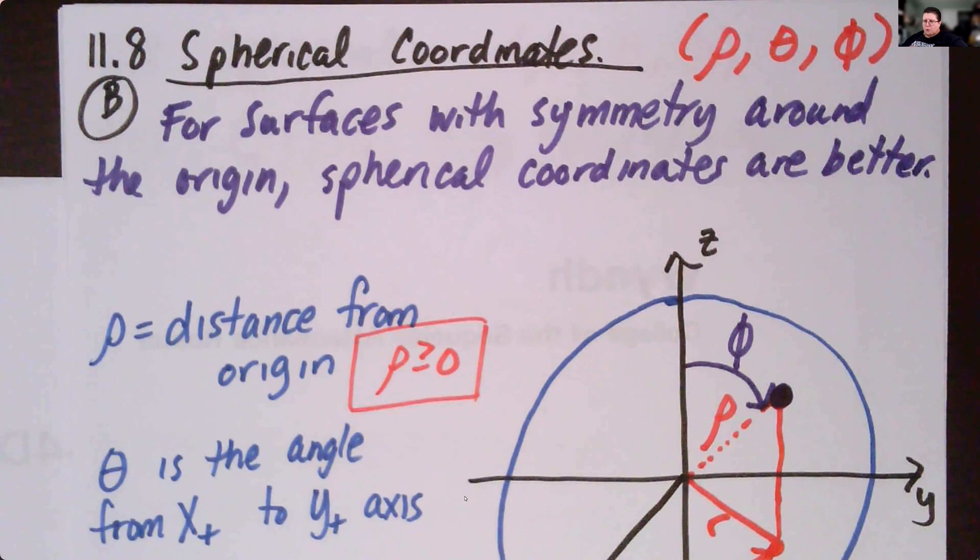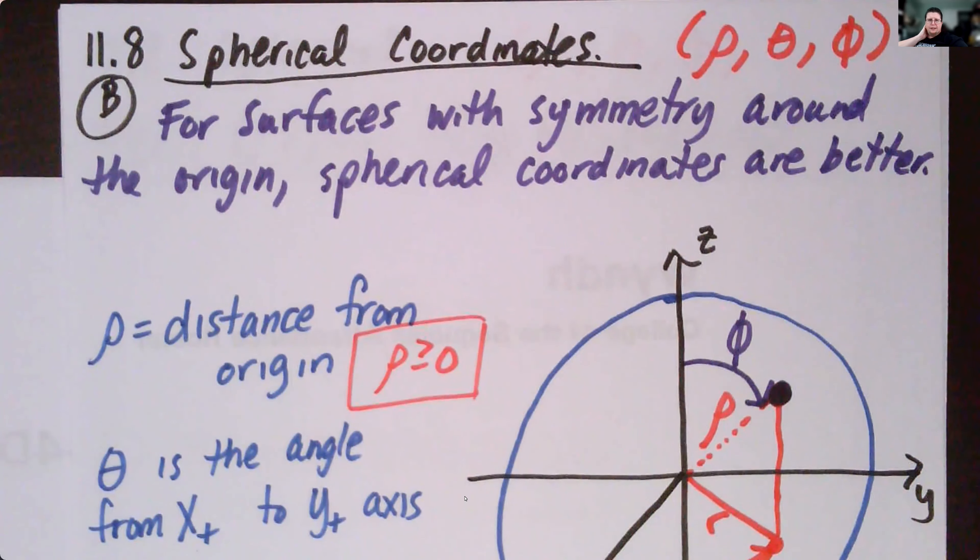So next part we'll do in section 11.8, we'll look at spherical coordinates. We just got done looking at cylindrical. Let's look at spherical. These are for surfaces with symmetry around the origin.